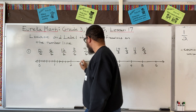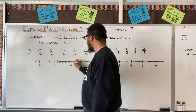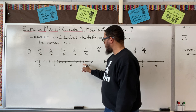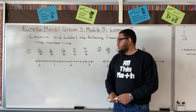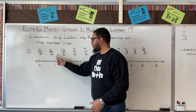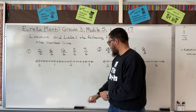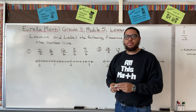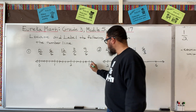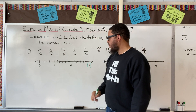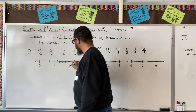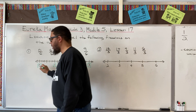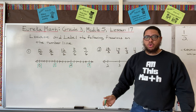Between two and three: halfway mark, then two lines to make three spaces on each side. Now I've got all my spaces — all my sixths. What I want to do next is draw boxes around the whole numbers, because the whole numbers are reference points. So my whole numbers are zero, one, two, and three.